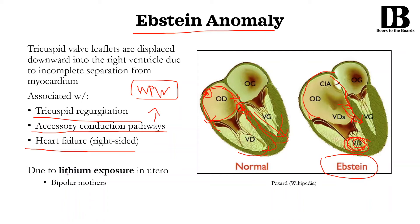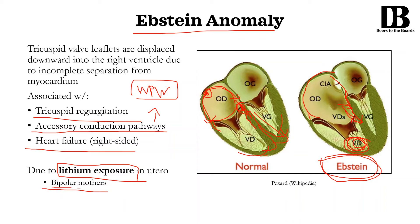One thing they really want you to know about Ebstein anomaly is lithium exposure. If you have a mother who is taking lithium and she's pregnant, this increases the chance of developing Ebstein anomaly — it's heavily, heavily associated with it. During the exam they generally try to be a bit more sneaky than just mentioning lithium exposure. Instead they like to say a bipolar pregnant mother comes to your clinic and she's taking appropriate medication. In your head you have to know that when they say she's bipolar and taking appropriate medication, she's likely taking lithium.